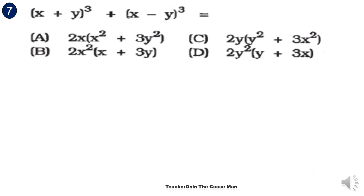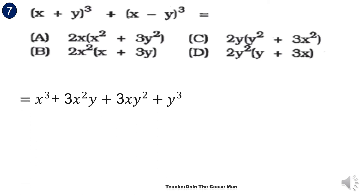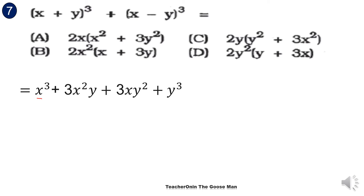Let's have another example involving a cube of a binomial: (x plus y) cubed plus (x minus y) cubed. When expanding the cube of a binomial, it produces 4 terms: the first term is the cube of x and the last term is the cube of y. To get the term 3x squared y, I multiply the square of x and y to get x squared y, times 3.